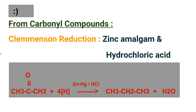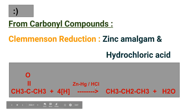This is the Clemmensen reduction reaction, named after the scientist Clemmensen. He used zinc amalgam and hydrochloric acid to reduce the carbonyl compound into alkanes. This reaction is carried out in acidic medium. Zinc is used as a catalyst — a substance that speeds up a chemical reaction without itself being consumed — and HCl is a strong acid that produces lots of protons in the medium.